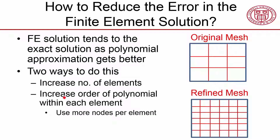The other way is to increase the order of the polynomial within each element, and you do this by using more nodes per element. The solver will calculate the temperature not only at the corner locations, but also at the midside nodes. So if you want the temperature at a point, it's calculated as a weighted average of these eight values — three plus three plus two, eight values.